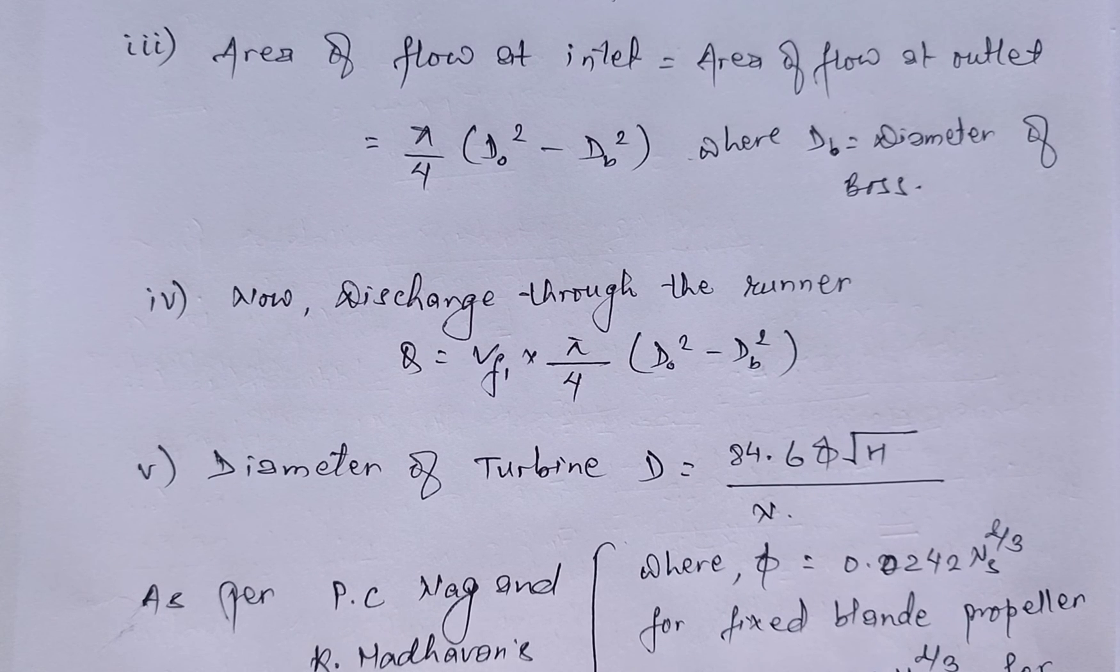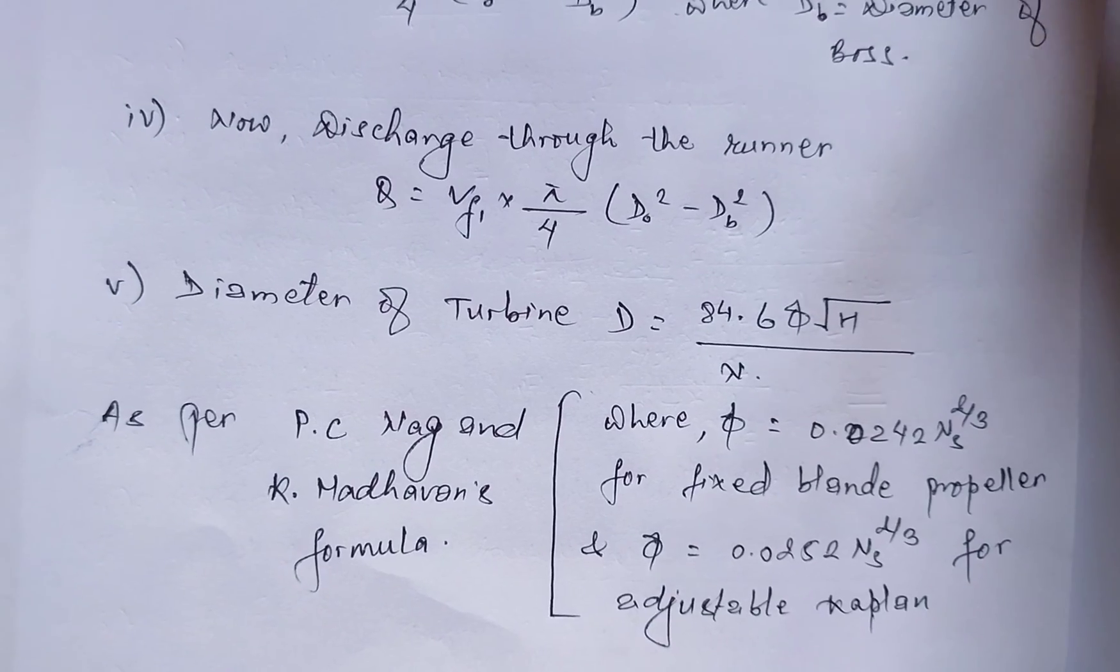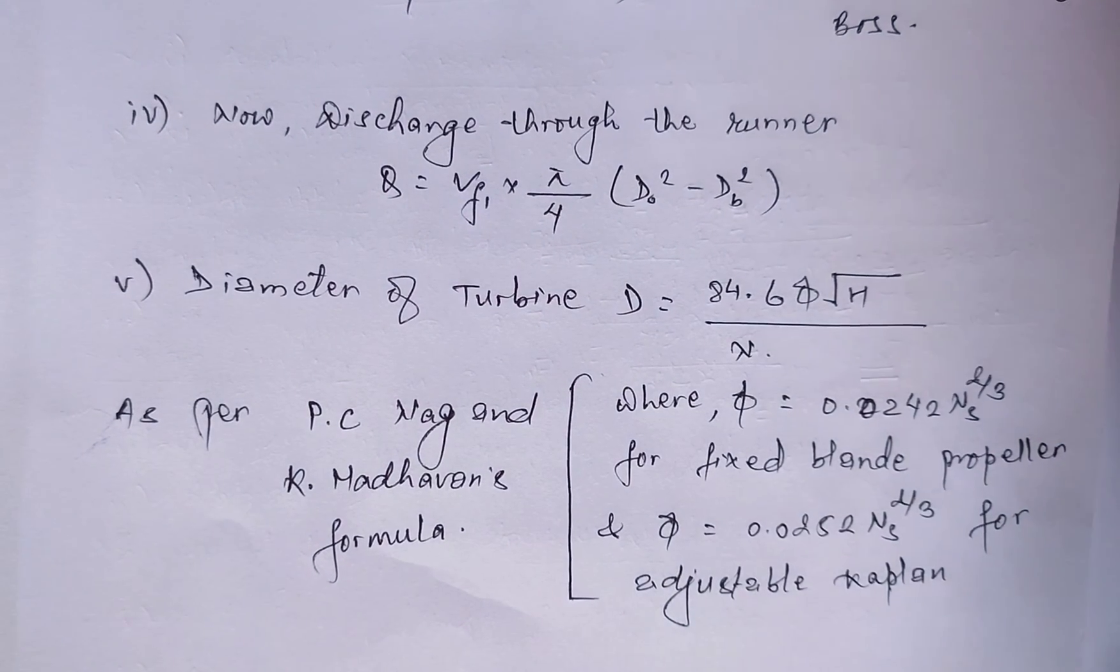And for the adjustable Kaplan, φ = 0.0252 × Ns^(2/3).